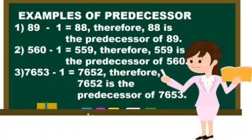Now 560 minus 1. Here the predecessor is 559. And similarly, 7653 minus 1 which is equal to 7652. It is the predecessor.